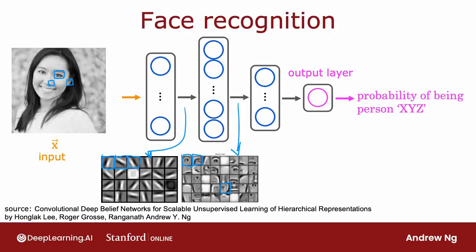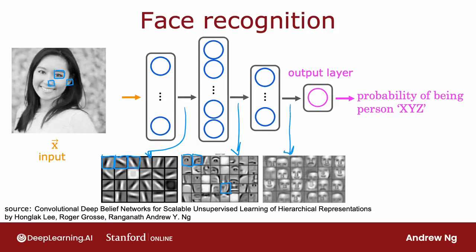And then as you look at the next hidden layer, the neural network is aggregating different parts of faces to then try to detect the presence or absence of larger, coarser face shapes. And then finally, detecting how much the face corresponds to different face shapes creates a rich set of features that helps the upper layer try to determine the identity of the person pictured.